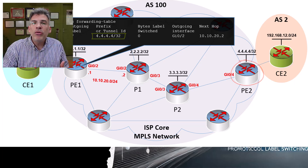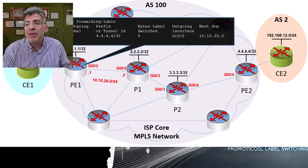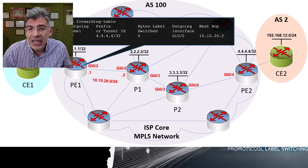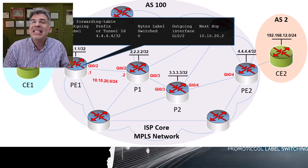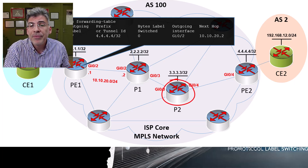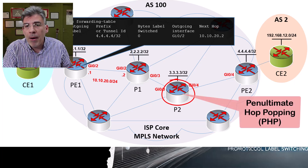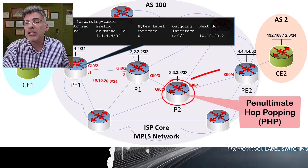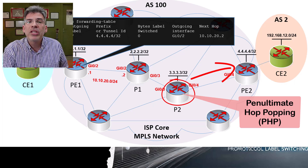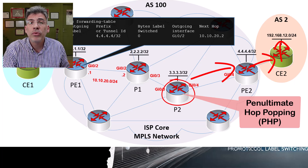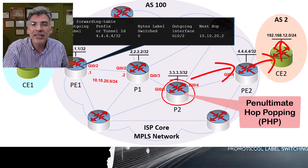Label switching continues to occur until you get to the last P router. At this point, penultimate hop popping — or PHP — takes place, where the label is popped or removed. Once that's done, the packet is sent to the PE2 router, which has a route to the destination and sends it to the destination using simple IP routing.